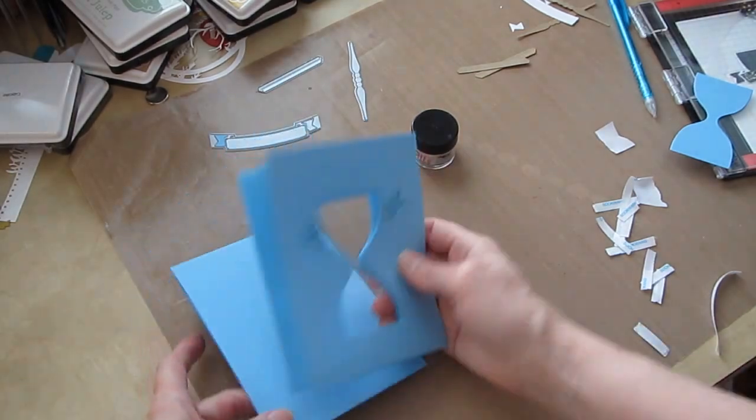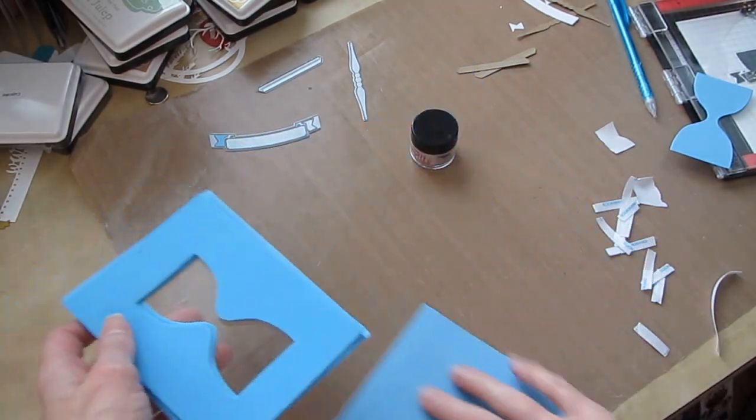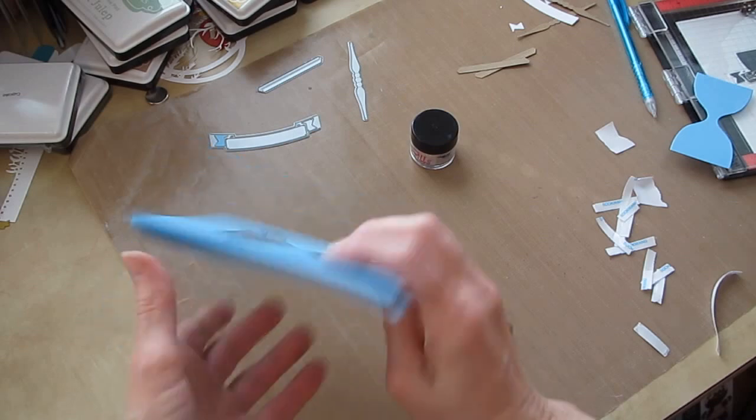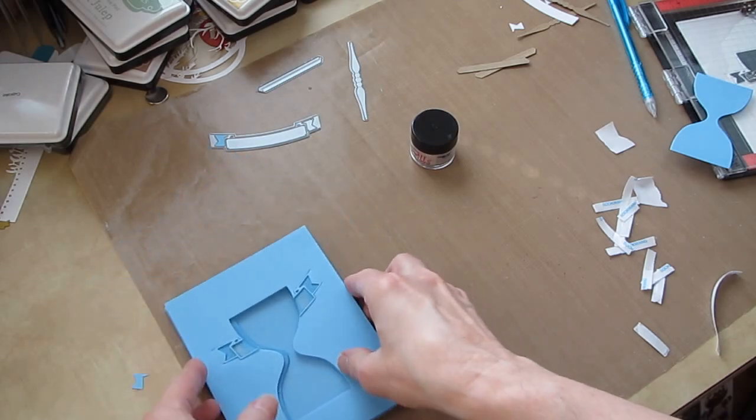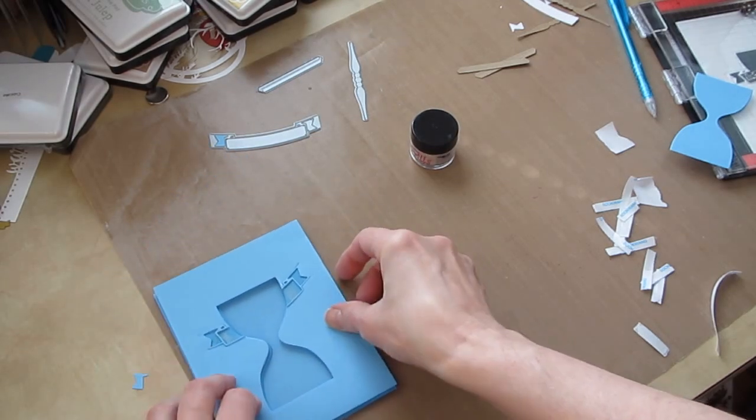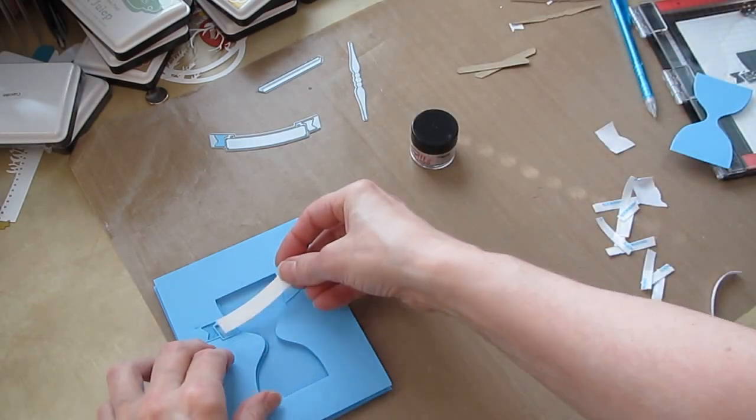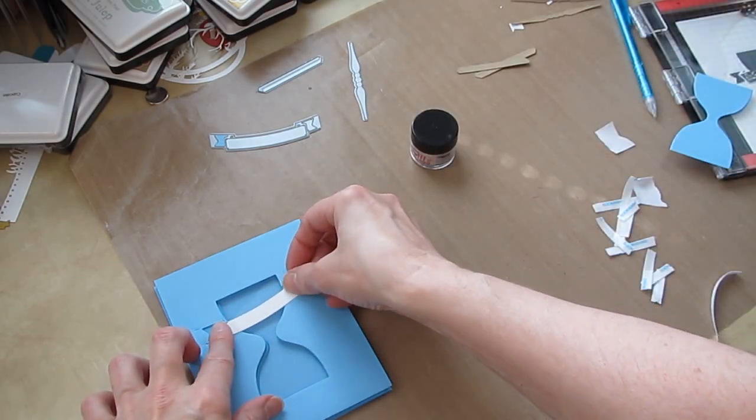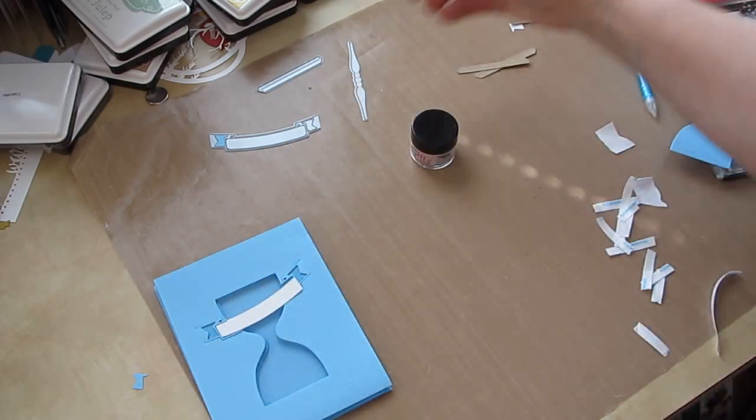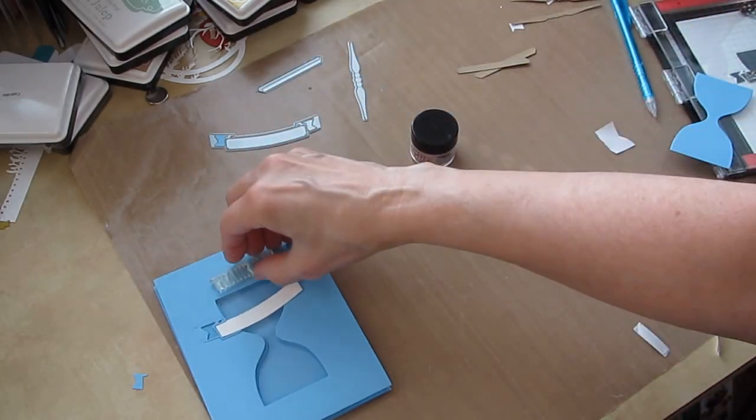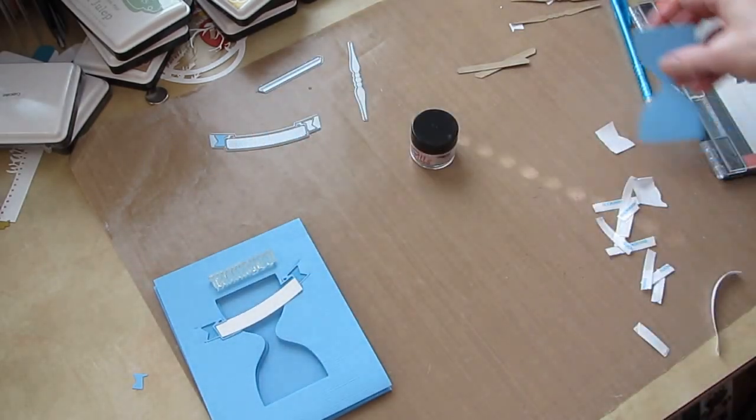I just used 8½ by 11, and I cut it the long way, vertically, because I like top-folding cards. They're easier to take pictures of. So, you would glue, after you get that filled up, you would glue this to that.